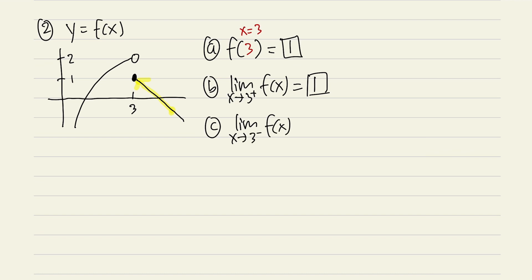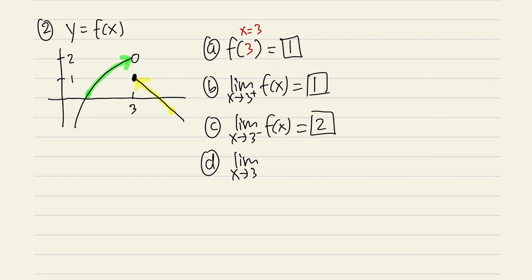For part c, the limit as x approaches 3 from the negative direction: use your left index finger and move toward x = 3. Pay attention to the y value — it is approaching 2. Even though there is an open circle, we care about the value being approached, and the y value of that open circle is 2. So the answer is 2.